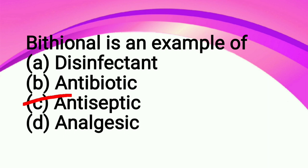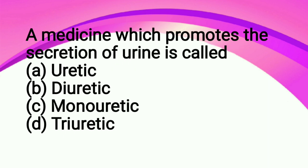Next question: a medicine which promotes the secretion of urine is called: option A uretic, option B diuretic, option C mono uretic, option D triuretic. So the correct answer is diuretics. Diuretics are types of drugs given to a person so that their urine secretion increases, so that whatever waste is forming in their body is released more from their body. That's why they are given diuretics.